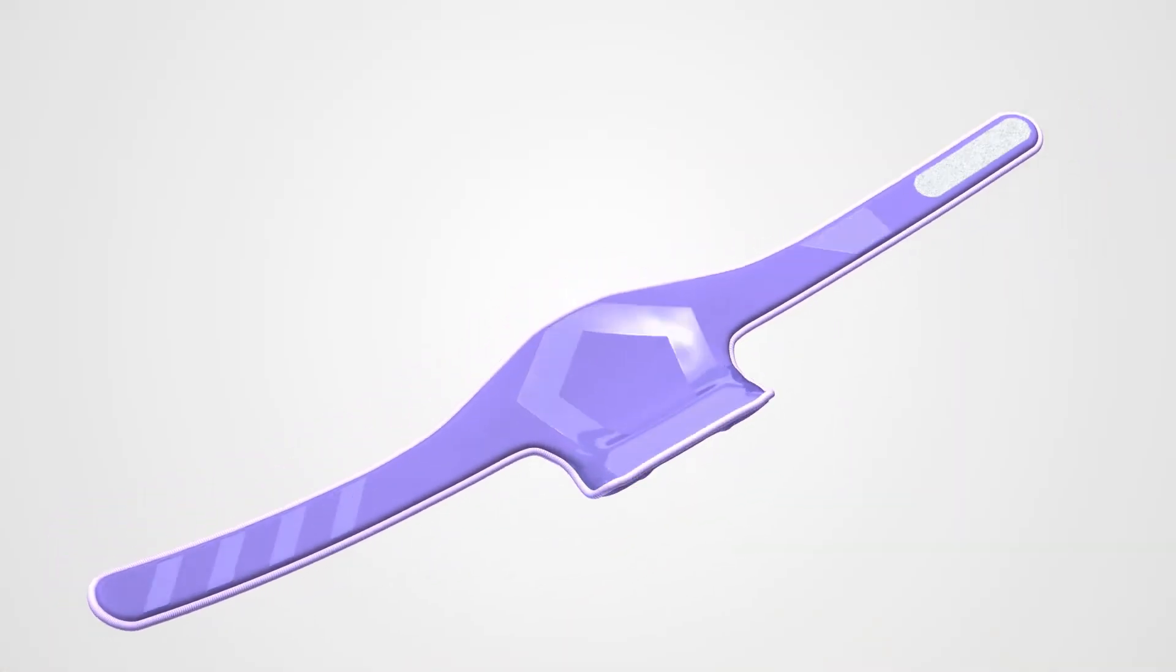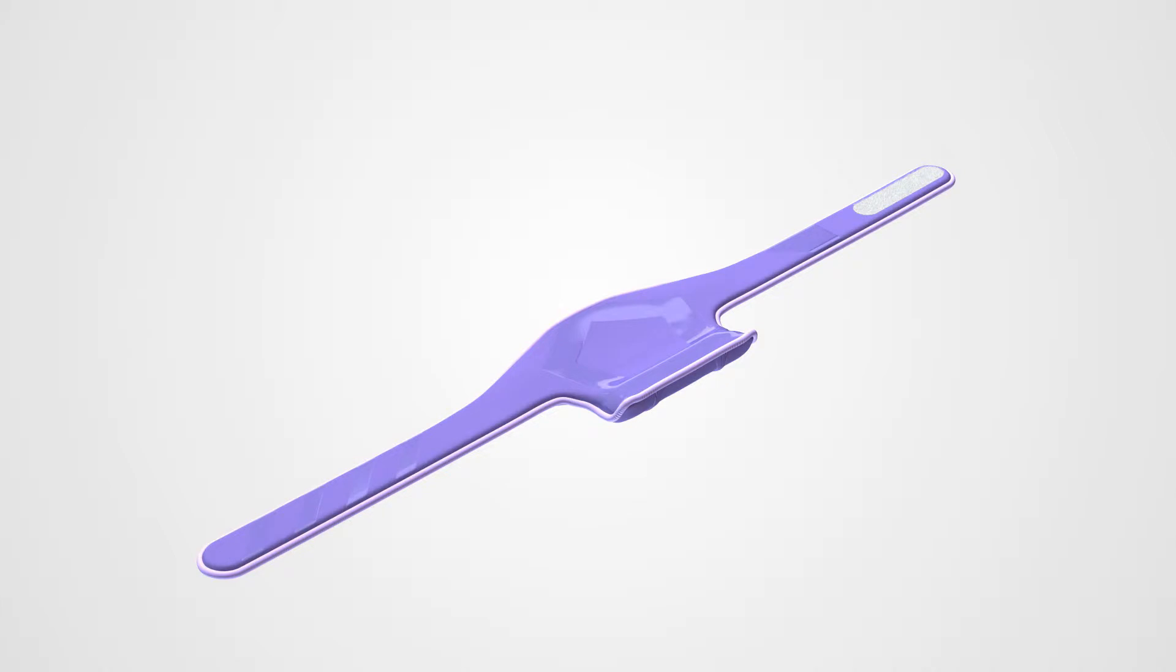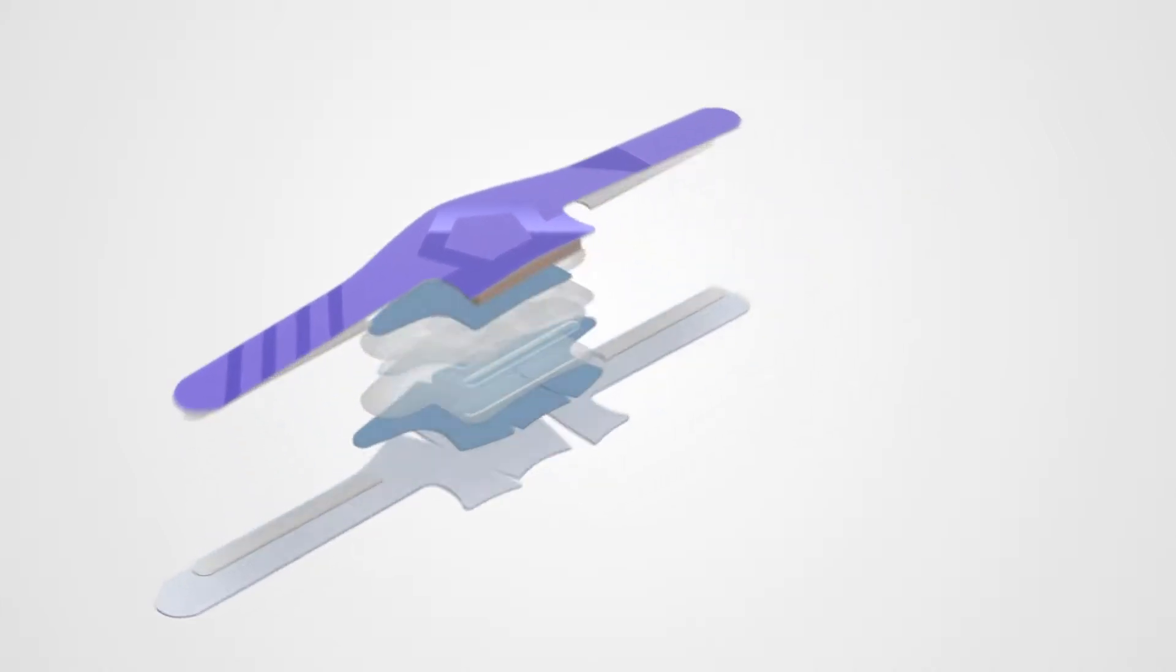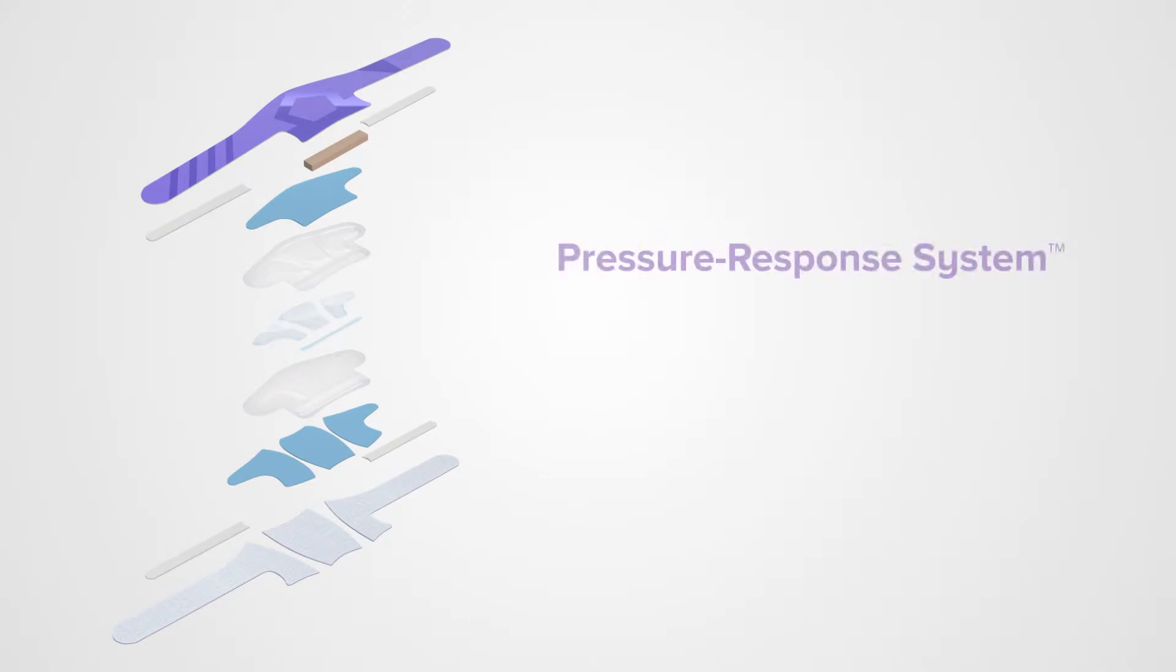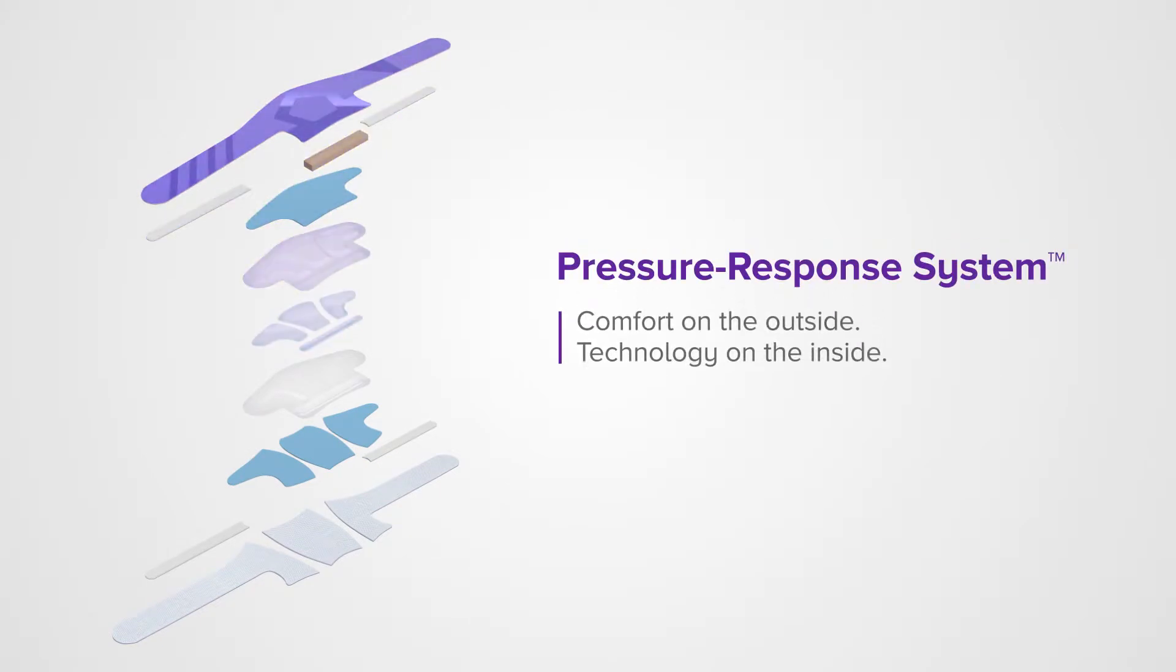The GelShield significantly reduces extracranial pressure by utilizing several breakthrough technologies to form our proprietary multi-layered pressure response system. Each layer contains state-of-the-art materials that have been carefully engineered to form a soft, lightweight, protective device.